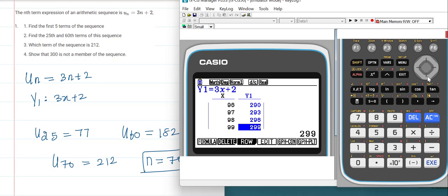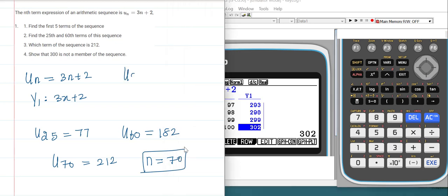So here I can understand that U99, the 99th term, is 299, and the 100th term is 302. So definitely 300 is not a term in this sequence.